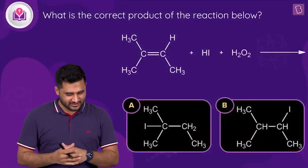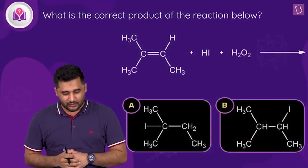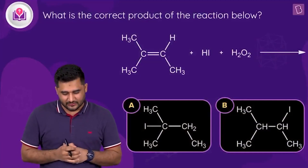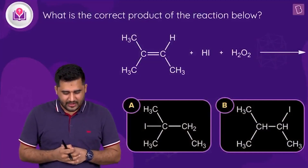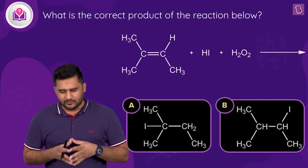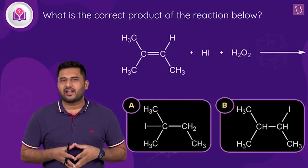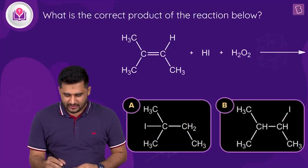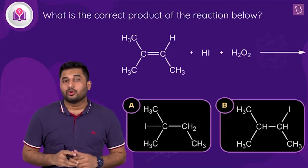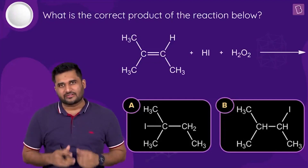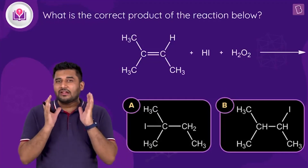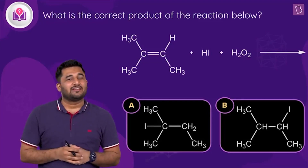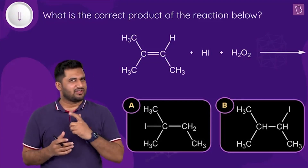Let's have a look at this question. The question asks for the correct product for this reaction. In the reaction, we have an alkene which is made to react with HI in the presence of H₂O₂. H₂O₂ is a peroxide, and whenever we hear of peroxide, one thing comes to mind: the Kharash effect.